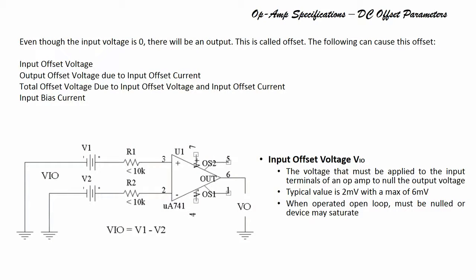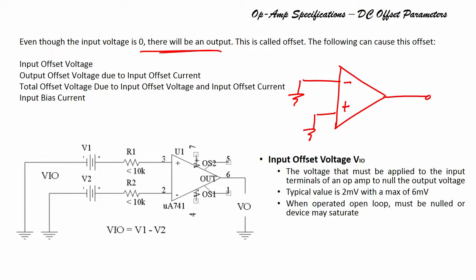As you can see on the screen, even though the input voltage is 0, there will be an output. What you should do in the laboratory is try to ground both your non-inverting and inverting terminals and observe the output voltage Vo. Ideally it should be 0, but even with zero input voltage there will be an output — this is called offset.